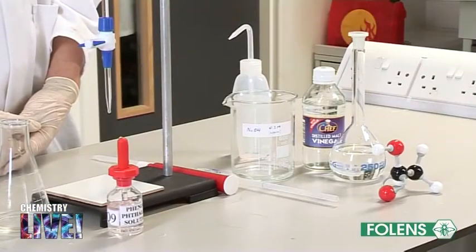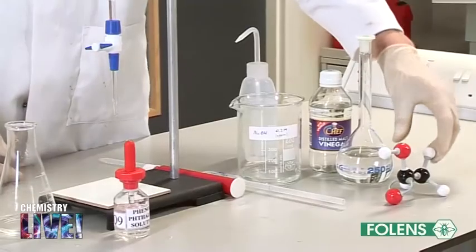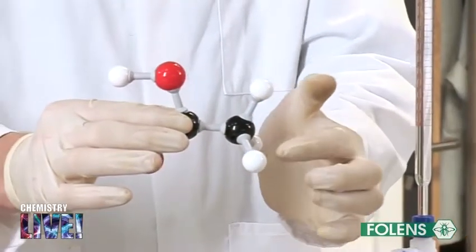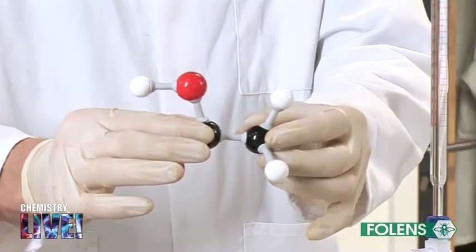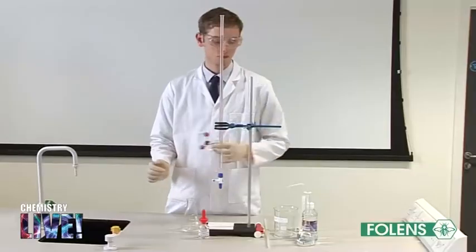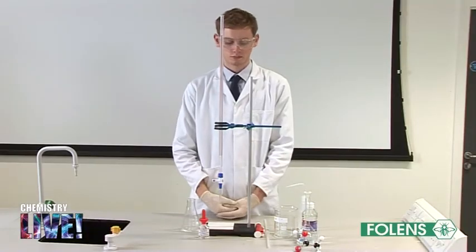Experiment to determine the percentage of ethanoic acid (acetic acid) in vinegar. Vinegar is a weak solution of an acid called ethanoic acid, whose formula is CH₃COOH, the old name of which was acetic acid.